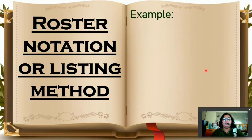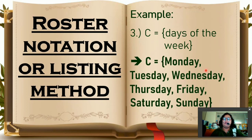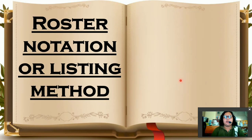Our next example, number 3. Set C, days of the week. So using listing method, we are going to determine the elements of set C. So what do you think is the answer? So it would be set C. The elements are Monday, Tuesday, Wednesday, Thursday, Friday, Saturday, and Sunday. So you can also start with Sunday or any days of the week. So as long as you completed the 7 elements of set C. The rule for roster notation or listing method.